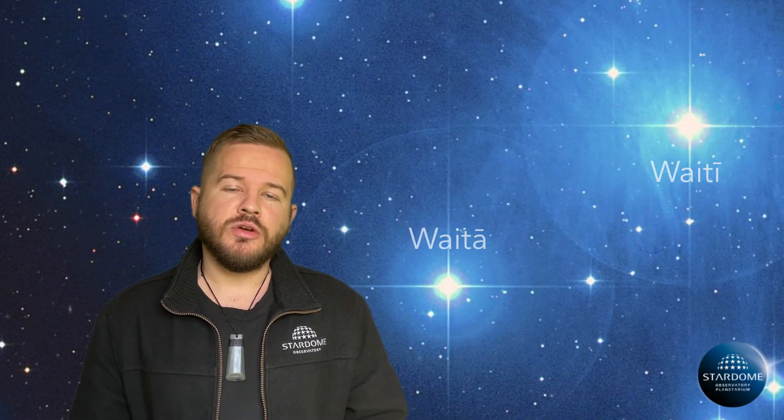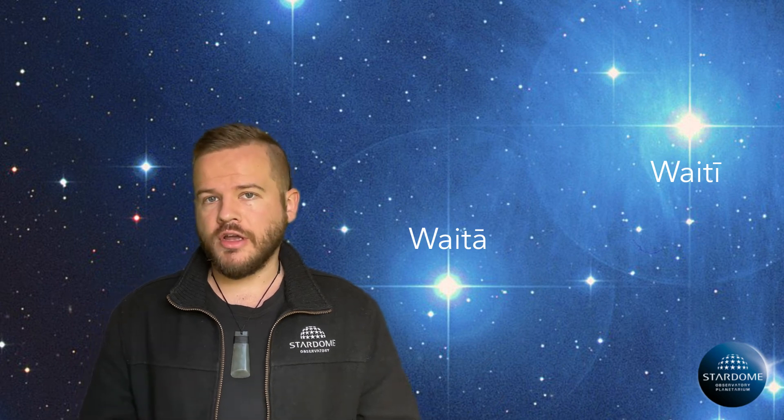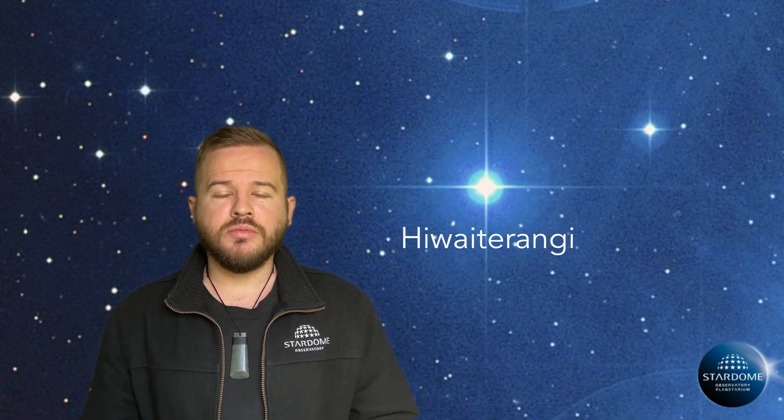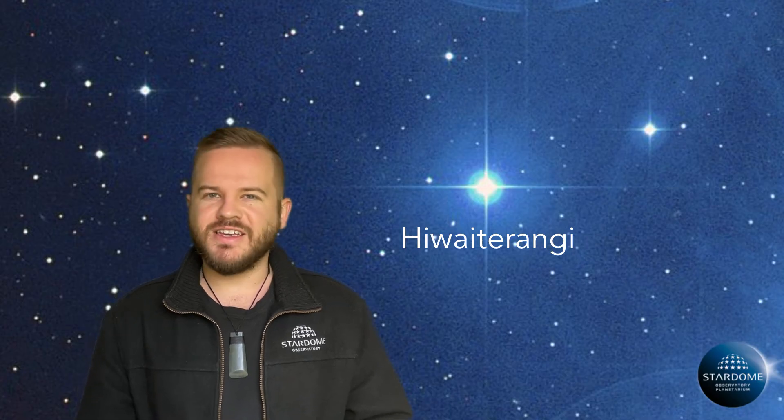Waiti and Waita represent food sources from fresh water and salt water. The star of Pohutakawa is the star that looks after and guides those that have passed away. Hiwe Ete Rangi represents our growth, prosperity, and our aspirations for the years ahead.